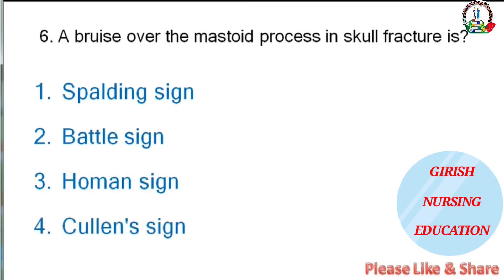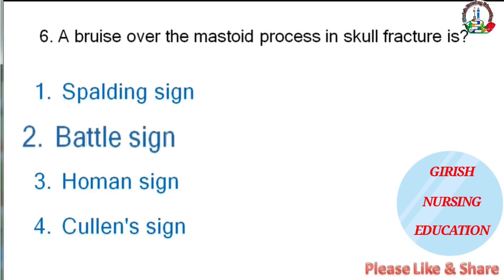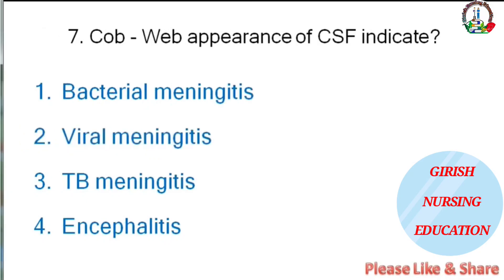A bruise over the mastoid process in skull fracture is called — Spalding's sign, Battle's sign, Homan's sign, or Cullen's sign. The correct answer is Battle's sign.